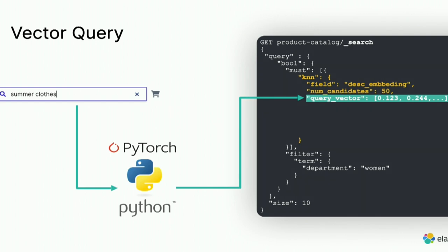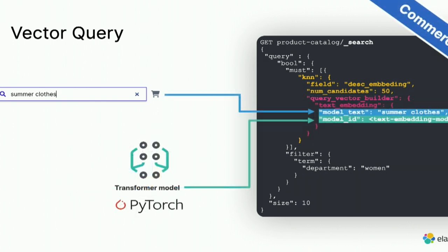How do you search for vectors? You take your text, run it through the same Python script that generates embeddings, and instead of using match queries or term queries, you use a kNN query — a new type of query responsible for running the vector search. You provide the vector and you're good to go. The cool thing is you're still inside Elasticsearch, so you have access to all the features you know: filtering by department, pagination, aggregations, and so on.